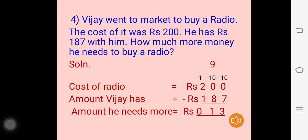Starting the process of subtraction: 0 minus 7 is not possible. Go to the next place — the 10s place — again 0 is there. Go back to the 100s place; borrow 1 ten from the 100s place. 2 becomes 1, 0 becomes 10. Borrow 1 again to the units place: 10 becomes 9, 0 becomes 10. 10 minus 7 is 3; 9 minus 8 is 1 in the 10s place; 1 minus 1 is 0. The amount he needs more is rupees 13.